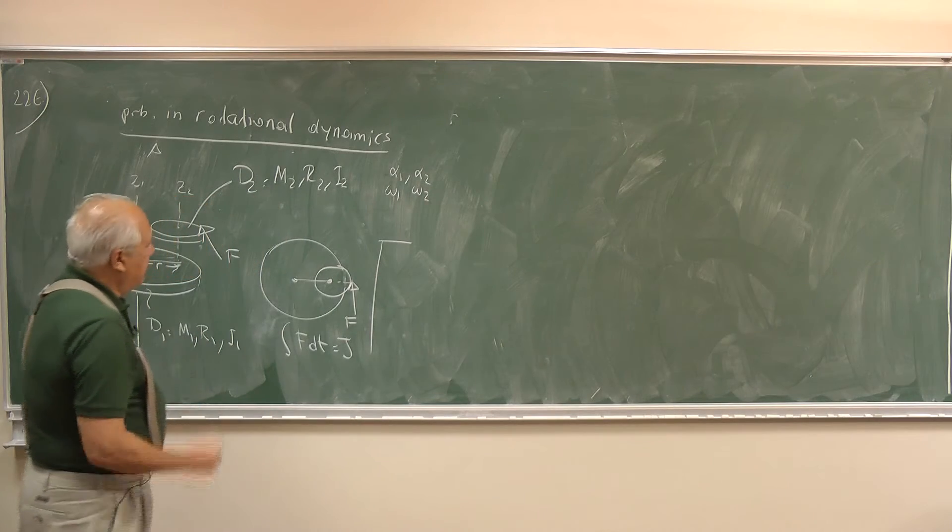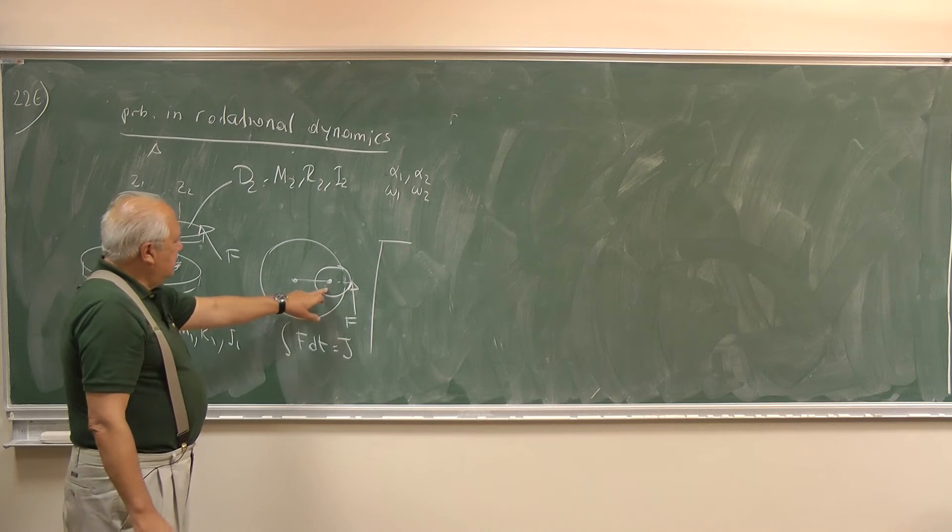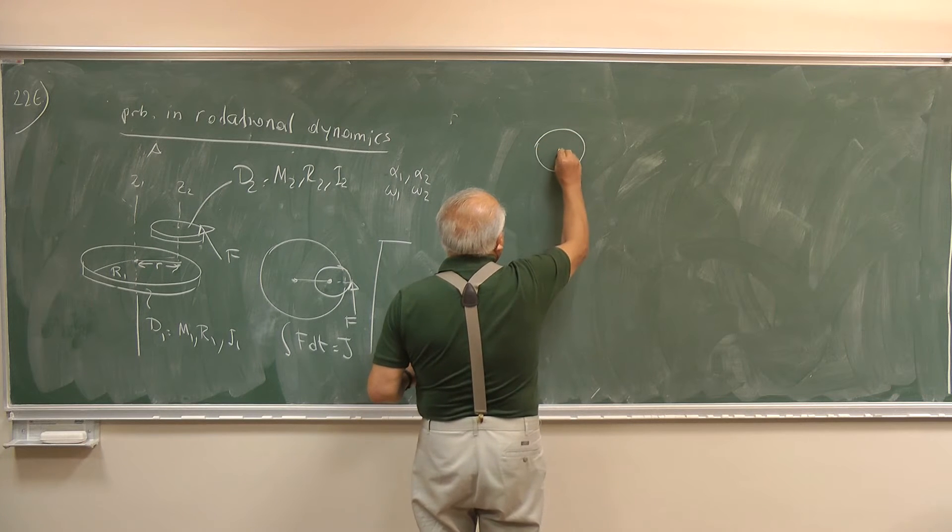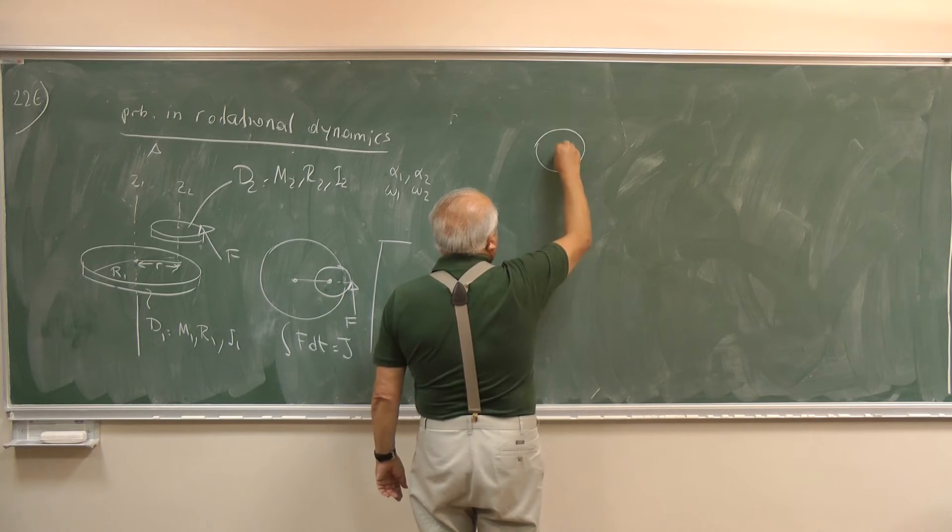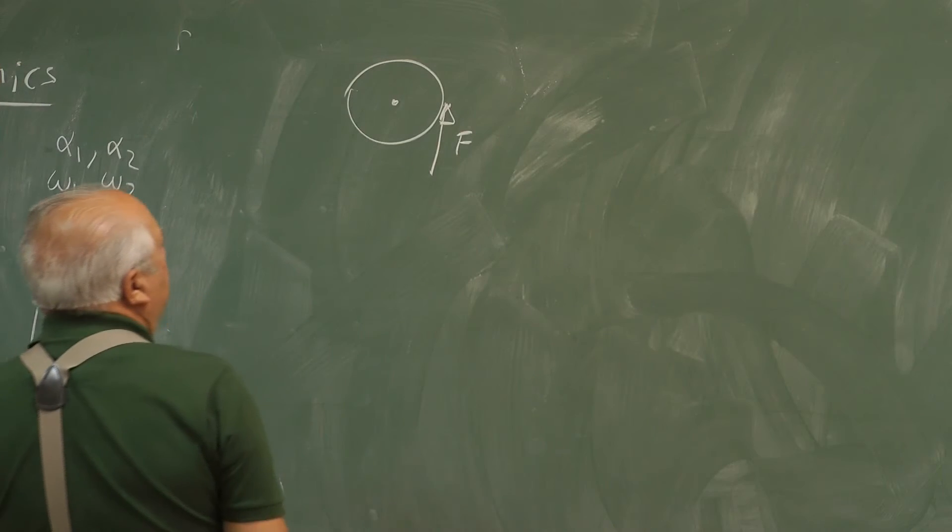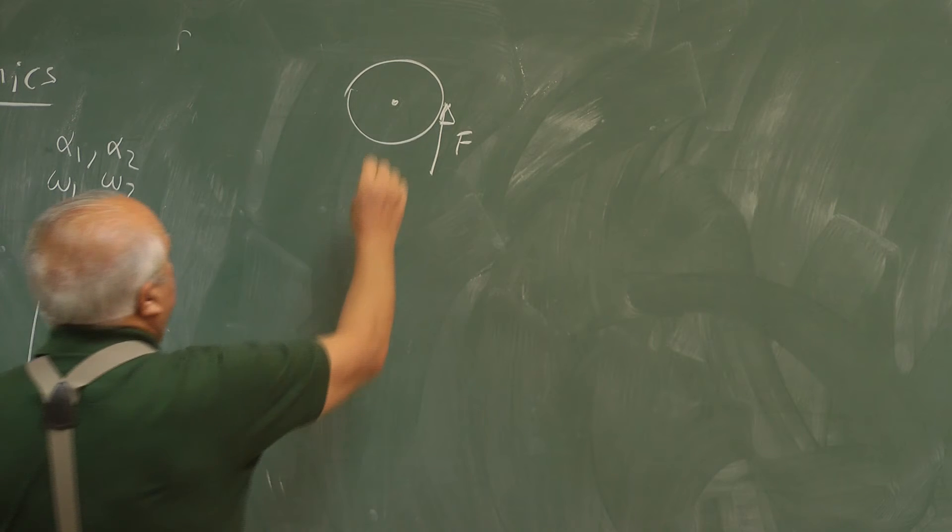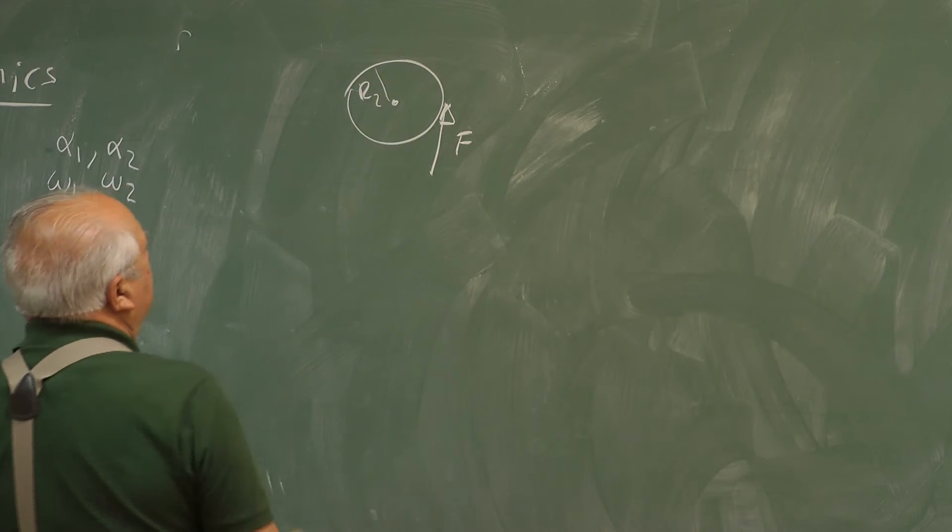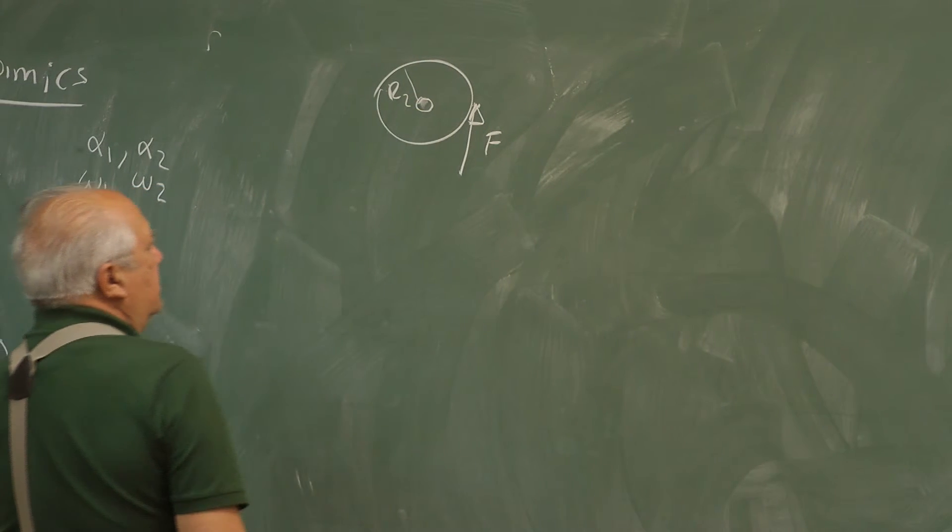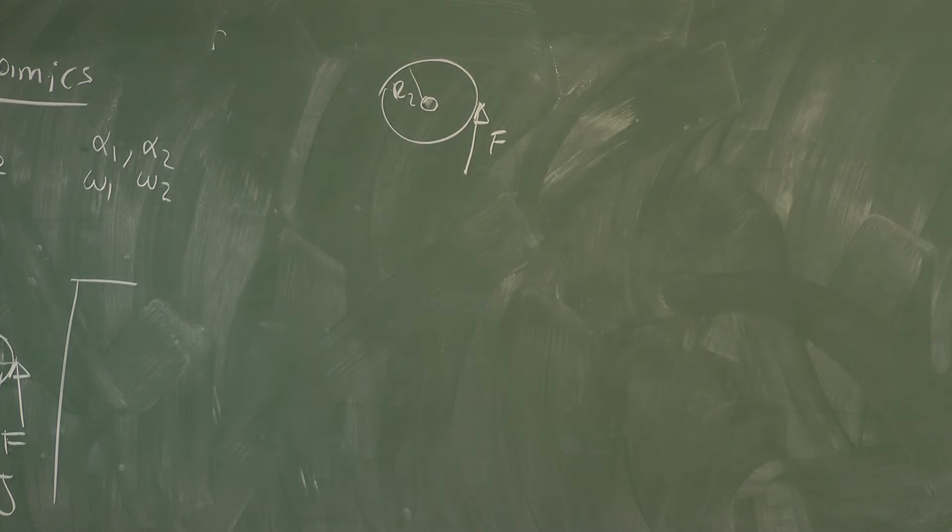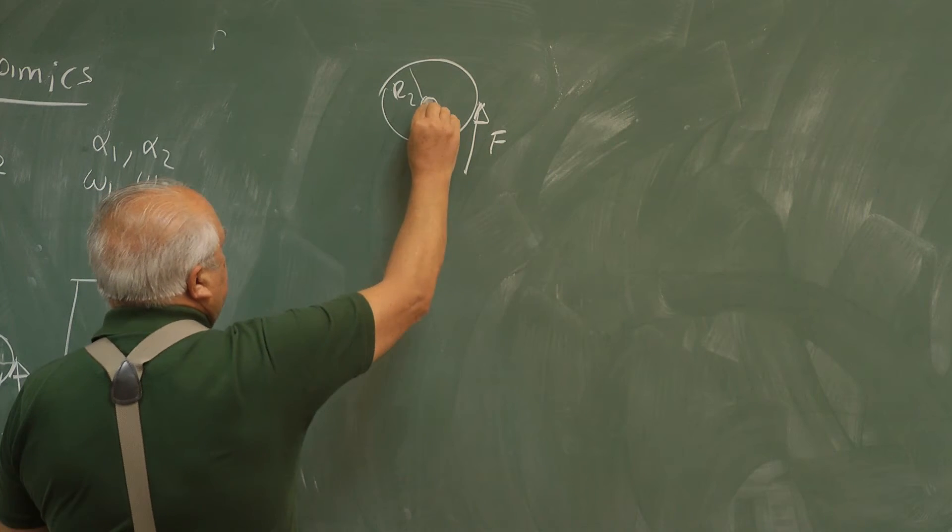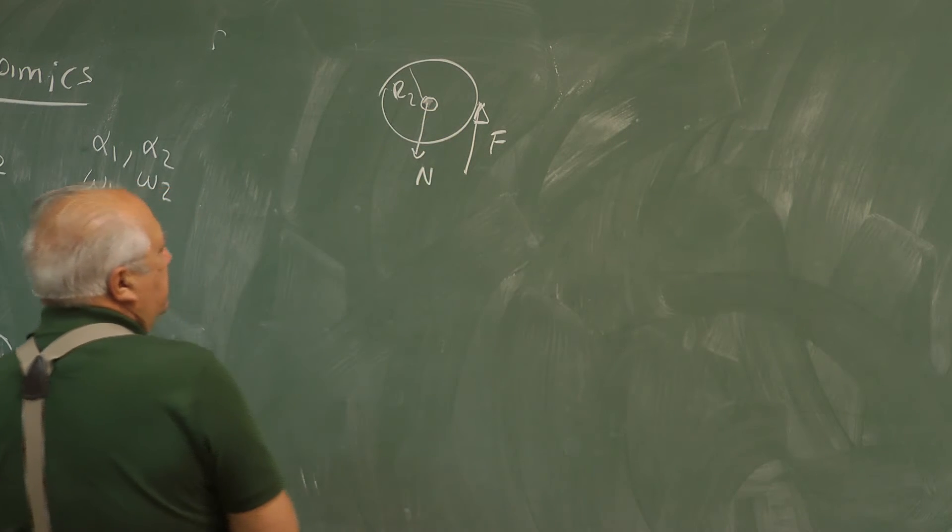And we start analyzing it. Let's look at the small disk. Here is the disk. And here is an axis. We apply force F. This is R2. But we should consider the disk subtracting the axis. So when you apply force F, this axis will apply a counter force N.